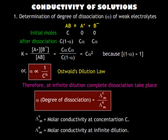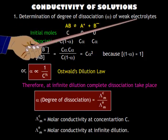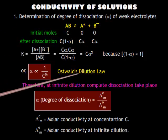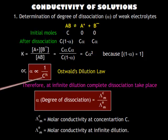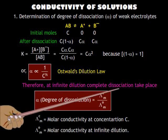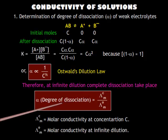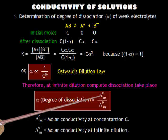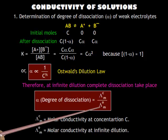There are also other applications of Kohlrausch's law. Application 1: Determination of degree of dissociation of weak electrolytes. Oswald's dilution law states that the degree of dissociation is inversely proportional to the square root of concentration for weak electrolytes; therefore, degree of dissociation increases with dilution. At infinite dilution, complete dissociation is expected, and that is the reason why Kohlrausch's law can be applied to weak electrolytes. The degree of dissociation can be calculated by measuring the molar conductivity at a particular concentration and dividing it by the limiting molar conductivity at infinite dilution.